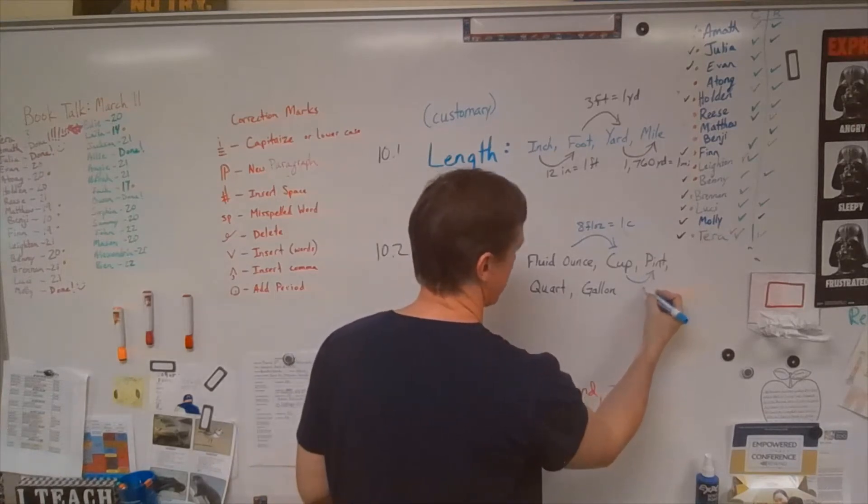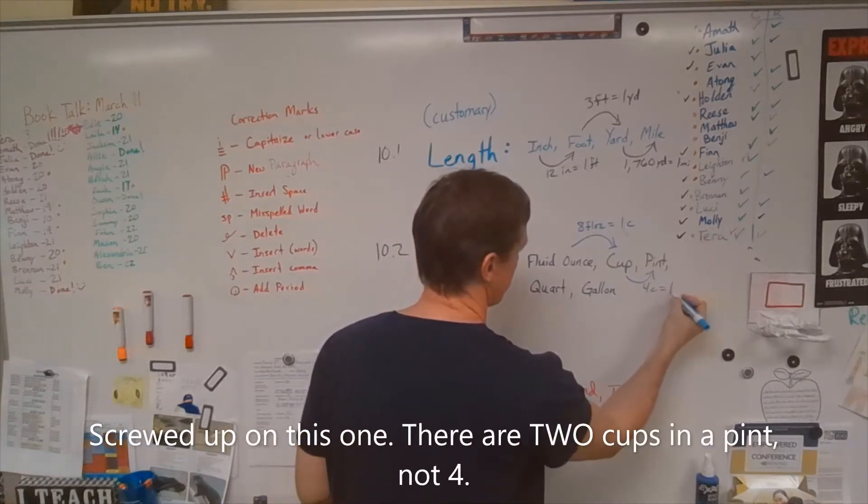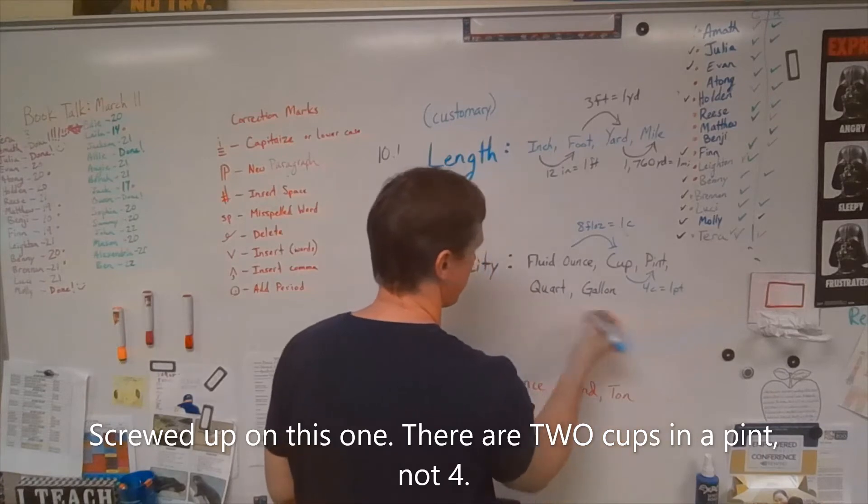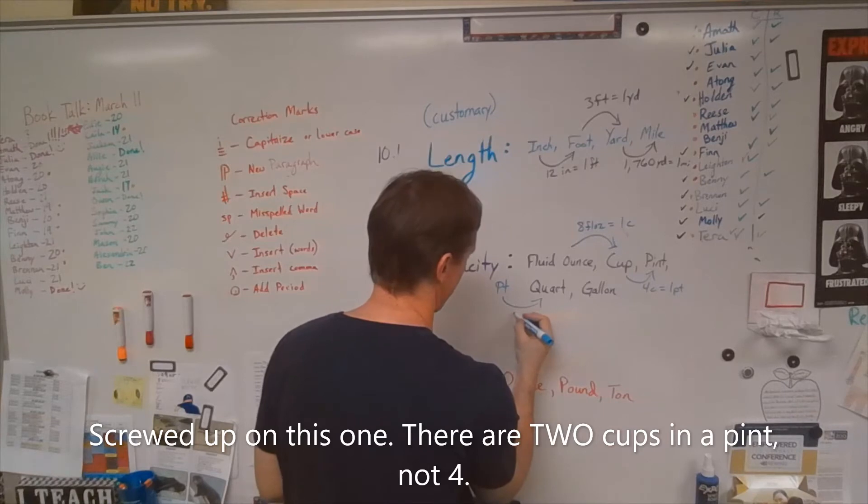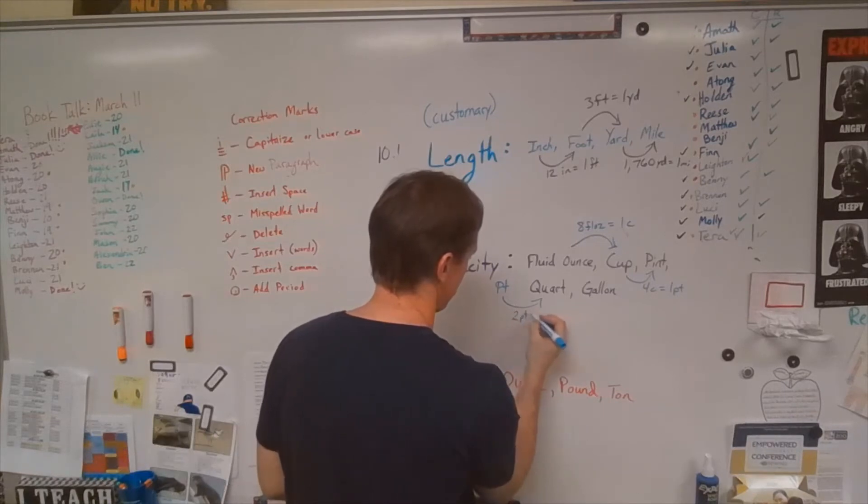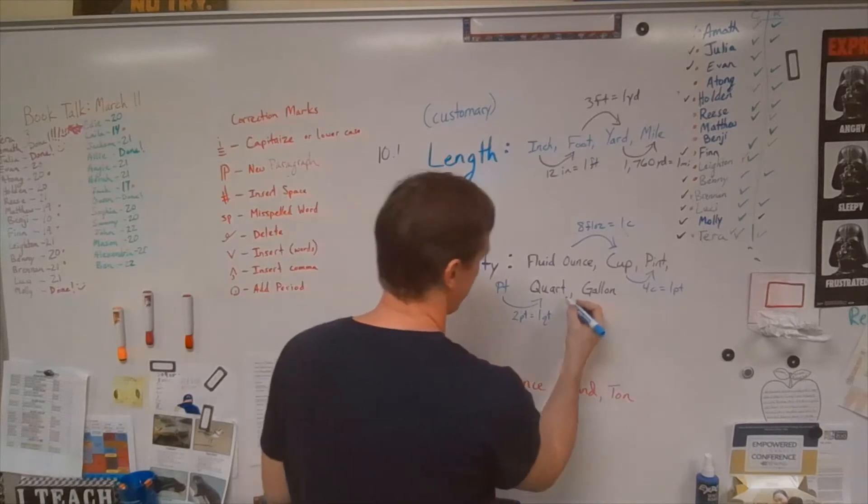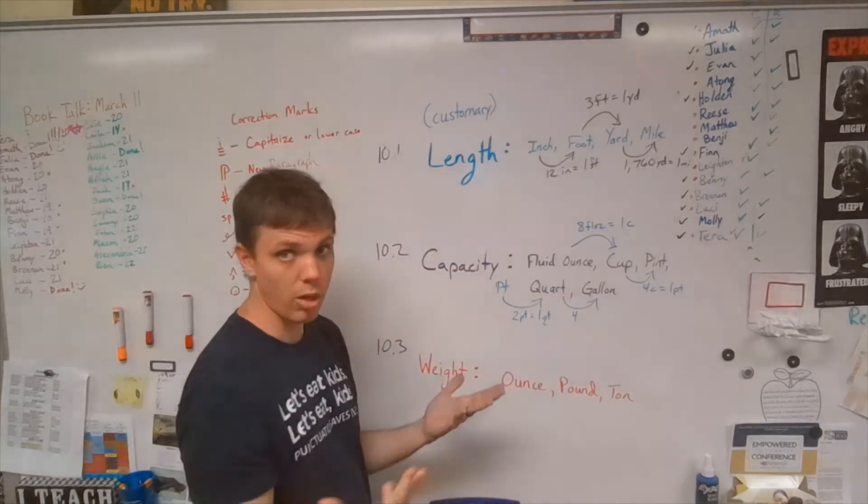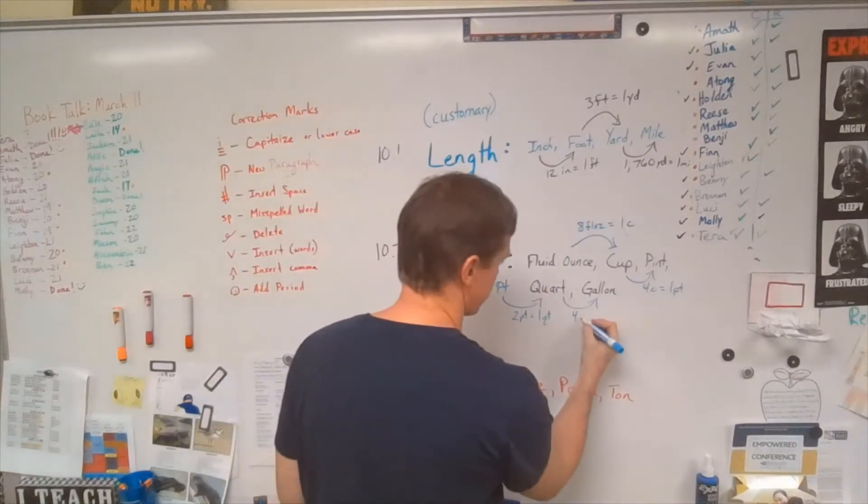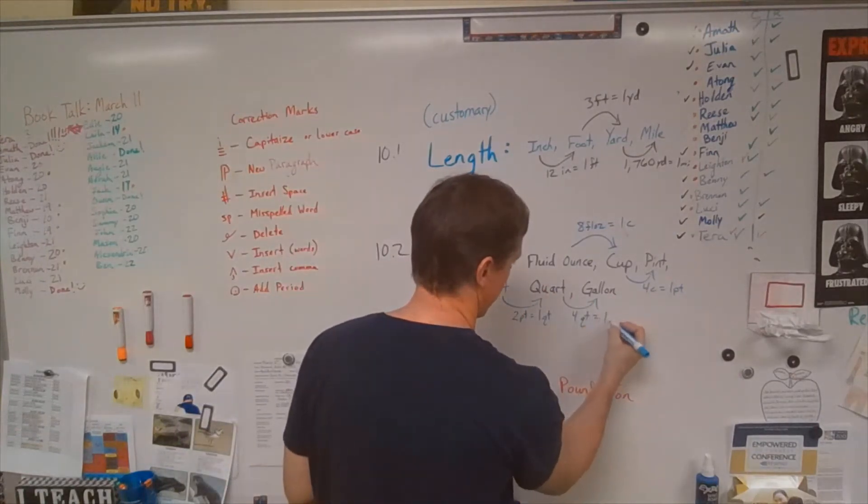Cups to pints is four cups equals one pint. And then weirdly from pints to quarts is actually two pints equals one quart. And then from quarts to gallons is, quart kind of sounds a little bit like quarter. So this is four quarts equals one gallon.